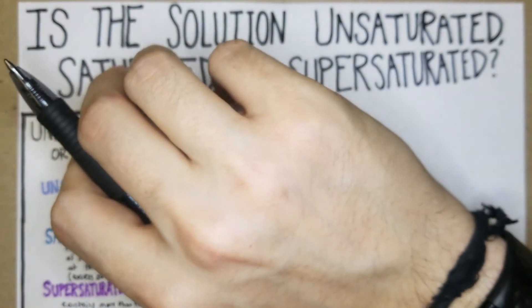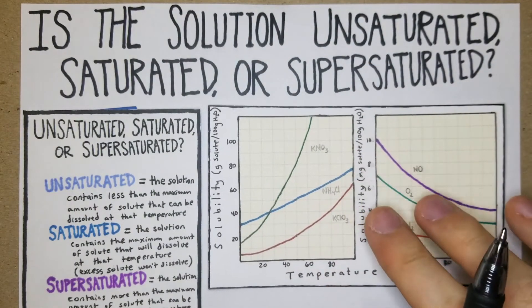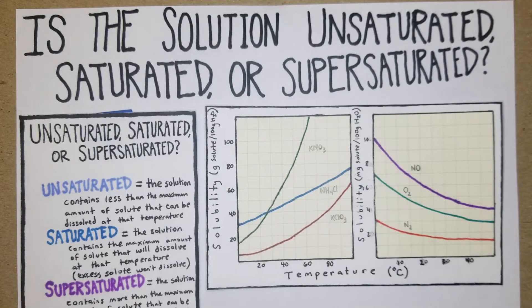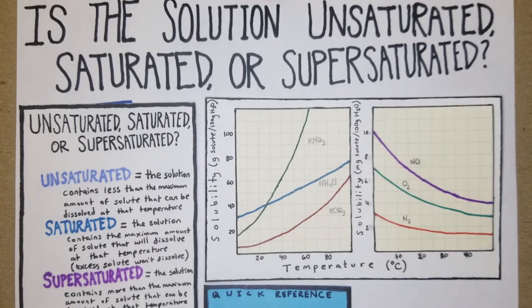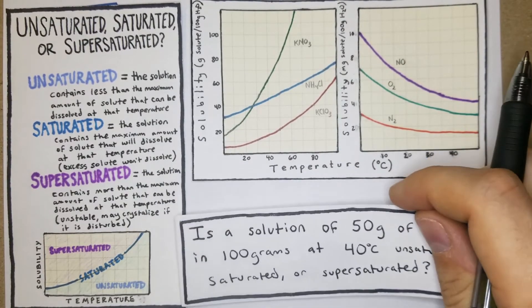We're going to reference our solubility curves again that we used in the last problem. There's this quick reference that I made: essentially what we're doing is comparing the concentration to the solubility. If the concentration is less than what the solubility will allow, then it's unsaturated. If they're equal, it's saturated. And if the concentration is greater than the solubility will allow, that means it's supersaturated.